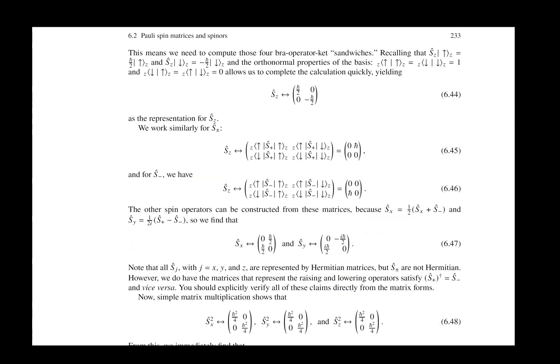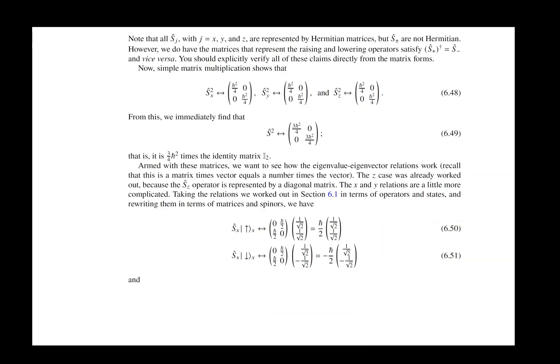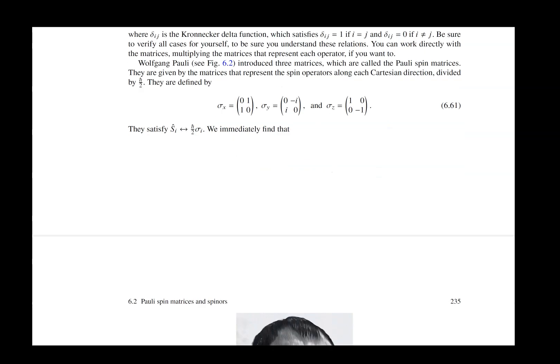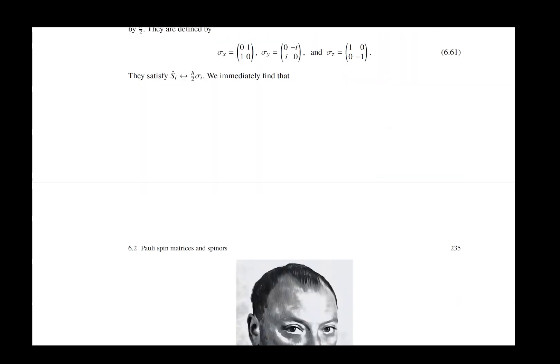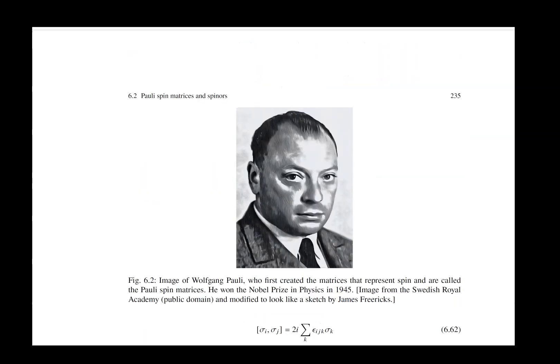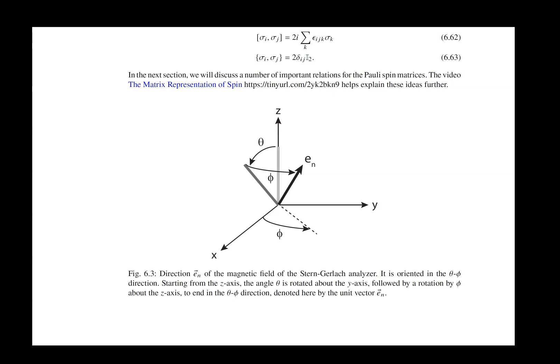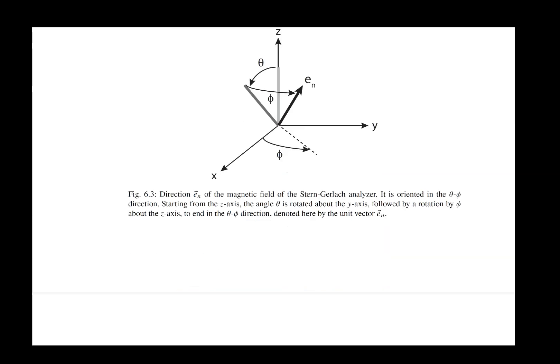And then we have matrices that represent the spin in this basis. And those are going to be the Pauli spin matrices. And so we develop what the Pauli spin matrices are by working with this algebra. Here they are in this equation. And of course, we pay tribute to Pauli, who is the first person to work out these matrices. We then look at how you would find spin in a particular direction along an axis that's oriented in the theta phi direction.